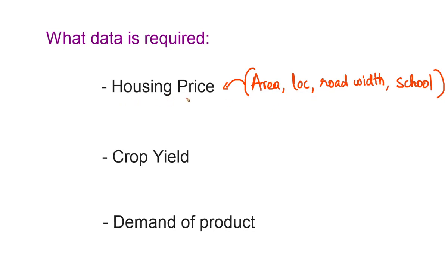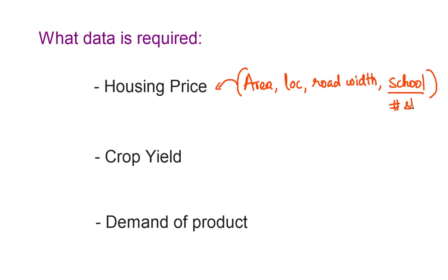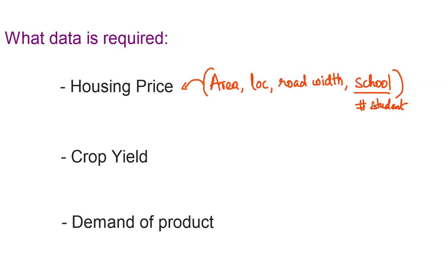For instance, in housing price, we're talking about schools. To measure how a school impacts housing price, you might collect data such as the number of students in the school, the rating of the school, and number of features in the school. You may not be certain whether a particular variable will help predict the price, but if you have an idea it might be helpful, it is still good to collect it and let the algorithm figure out if it is useful or not.